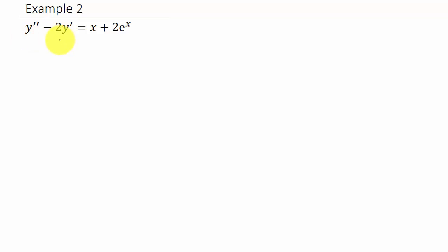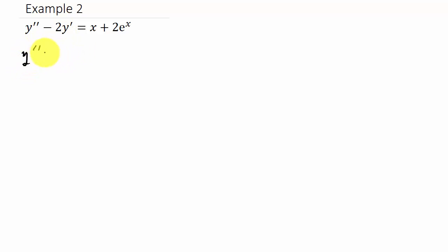Our second example is: y double prime minus 2y prime equals x plus 2e to the x. To get started, the first thing we have to do is find a solution y_c. We take this differential equation and set it equal to 0, giving us y double prime minus 2y prime equals 0.